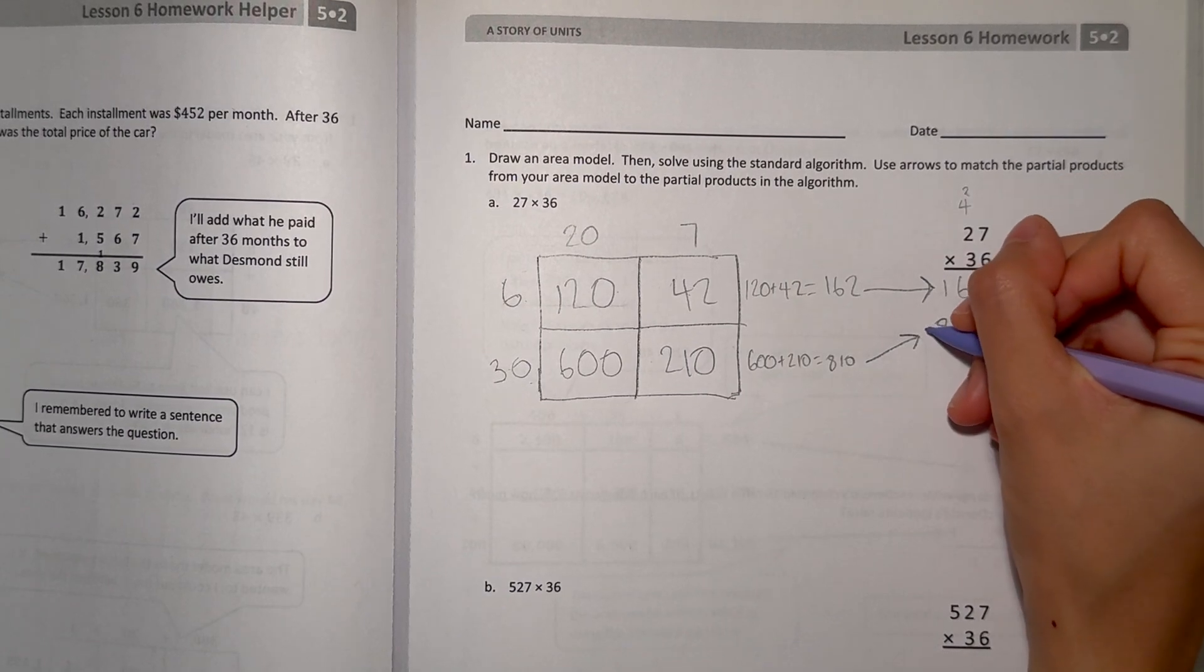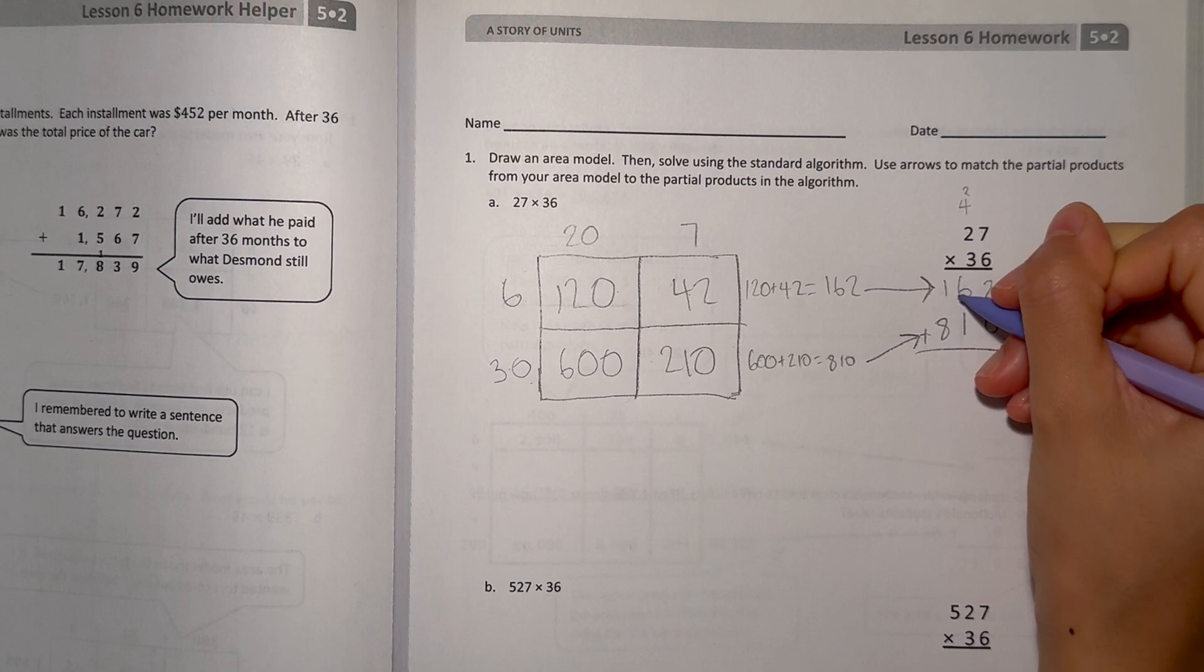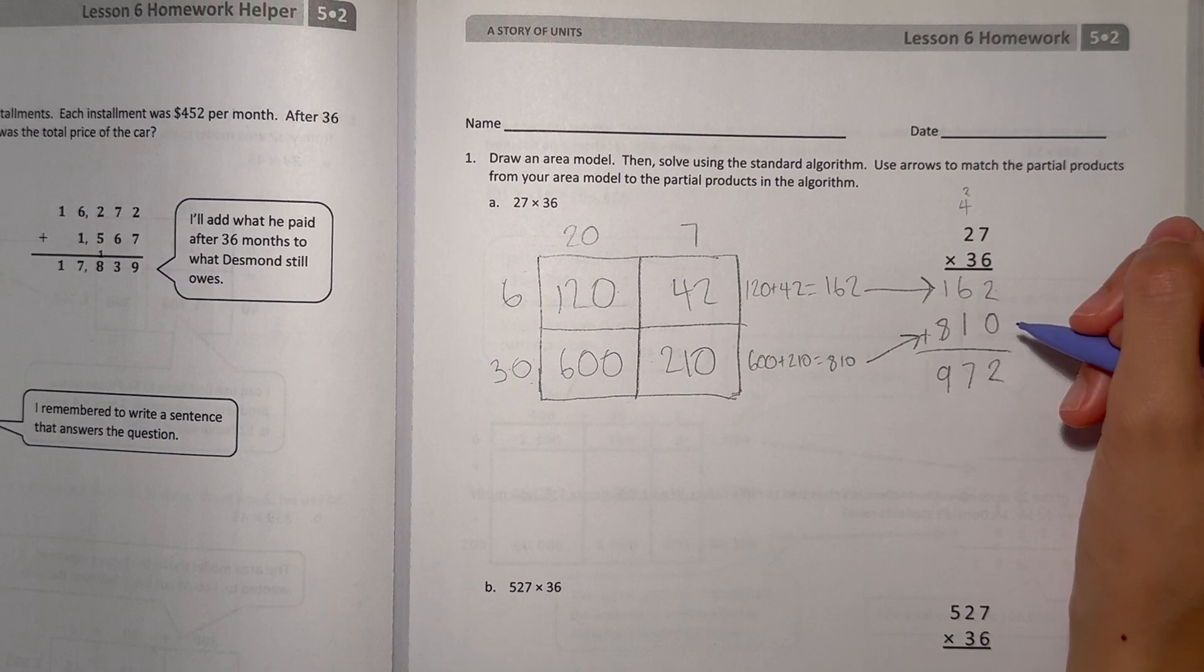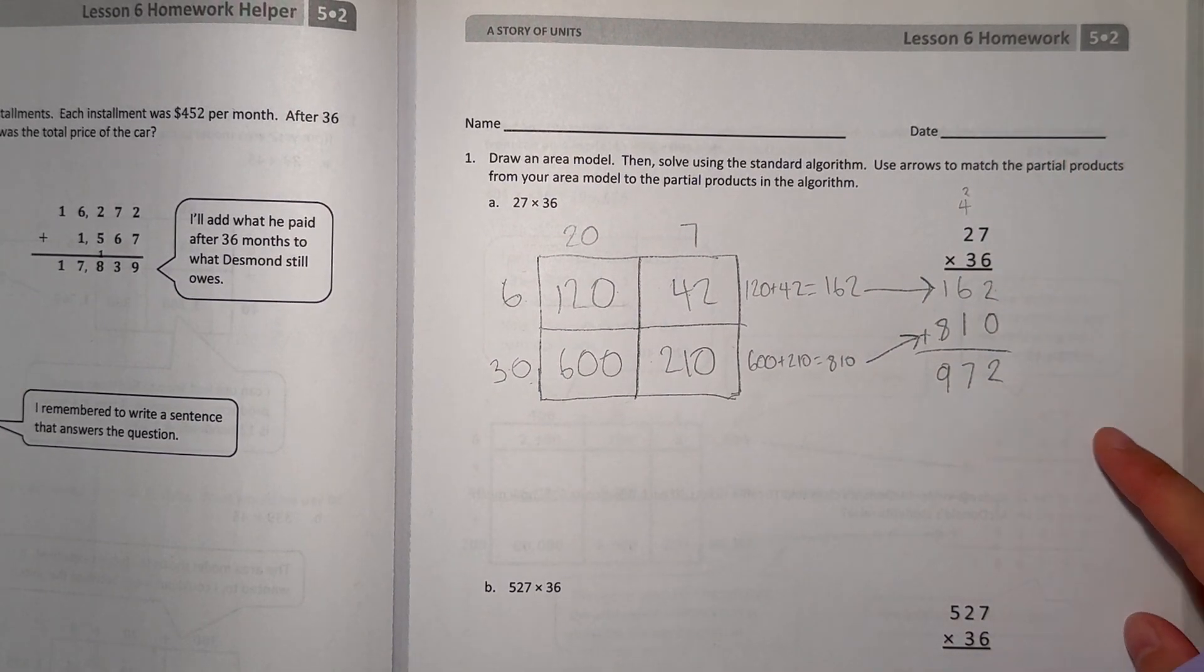The next step here would be to add 2 plus 0 is 2. 6 plus 1 is 7. And 1 plus 8 is 9. So our answer to 27 times 36 would be 972.